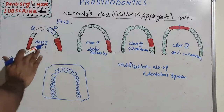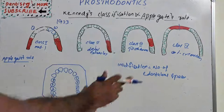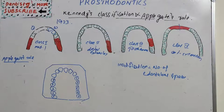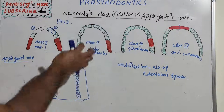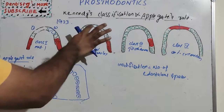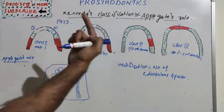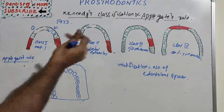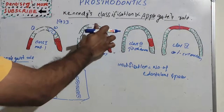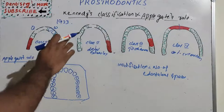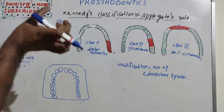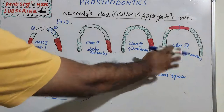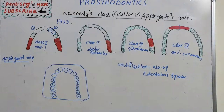So Class 1, Class 2, Class 3, and Class 4 each have modifications based on the number of edentulous spaces. In Class 2, modification 1, 2, or 3 depends on the number of additional edentulous spaces. But there is no modification in Class 4.